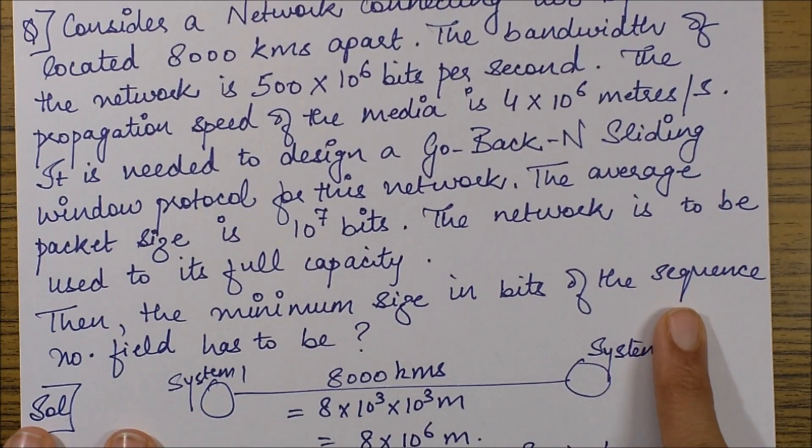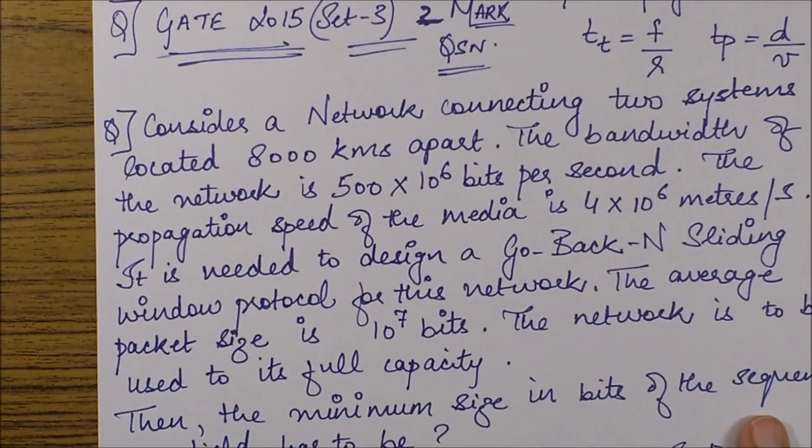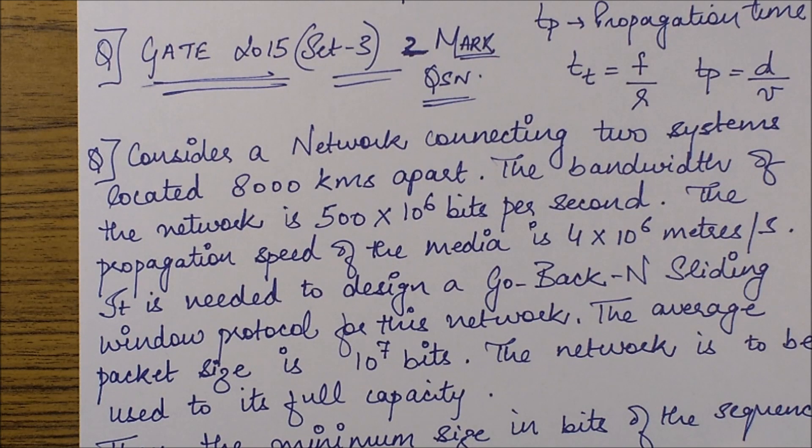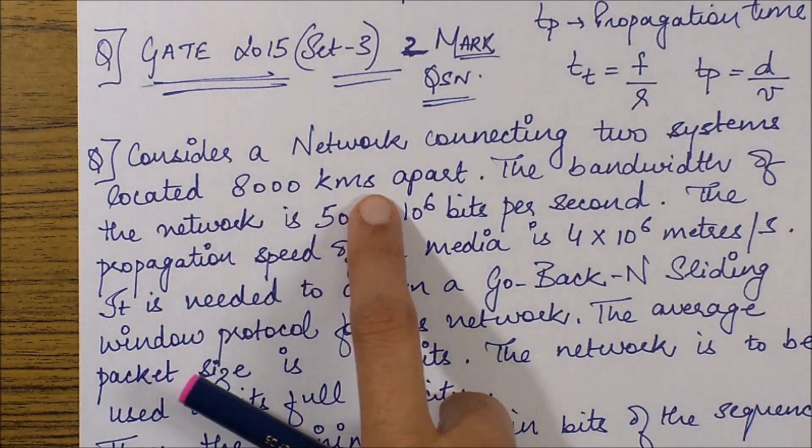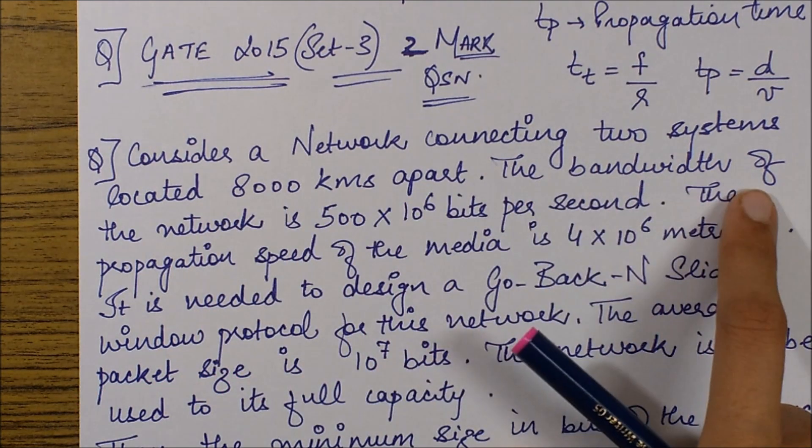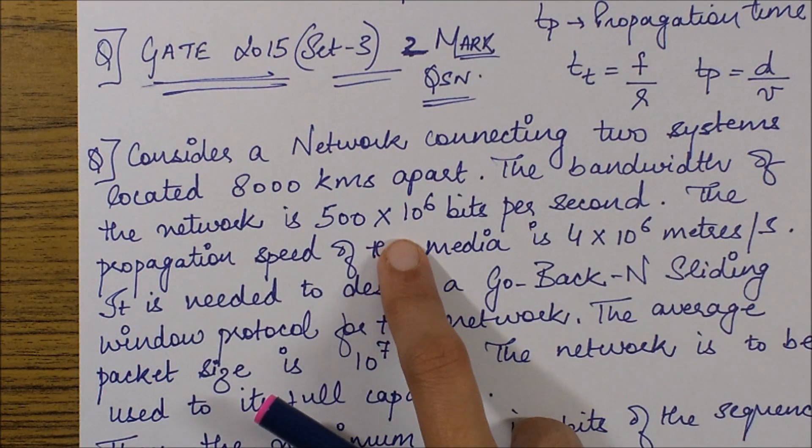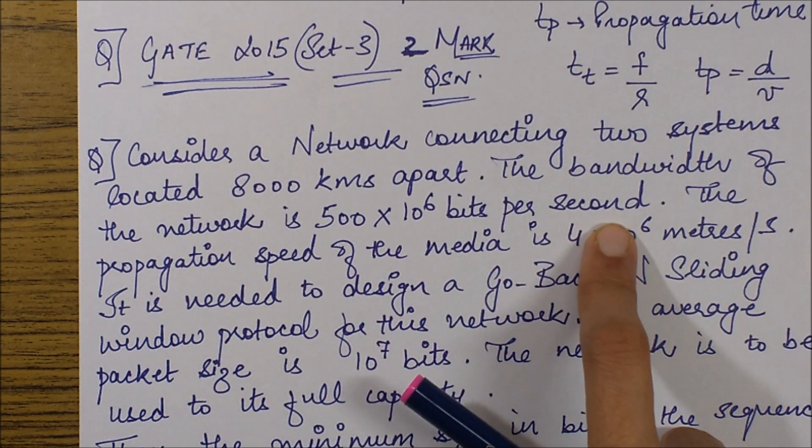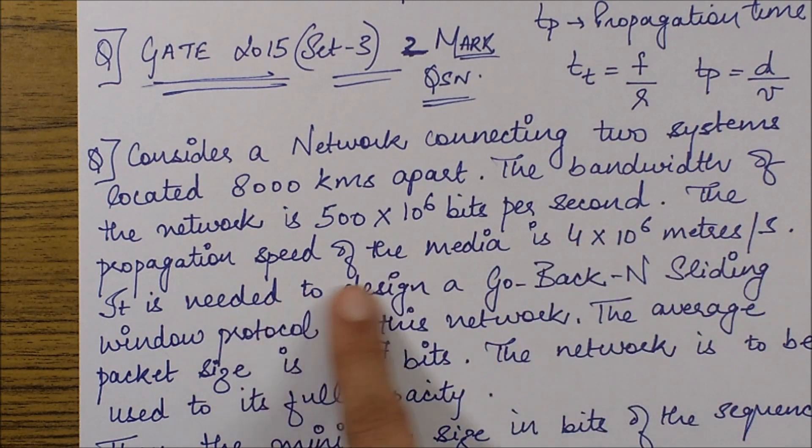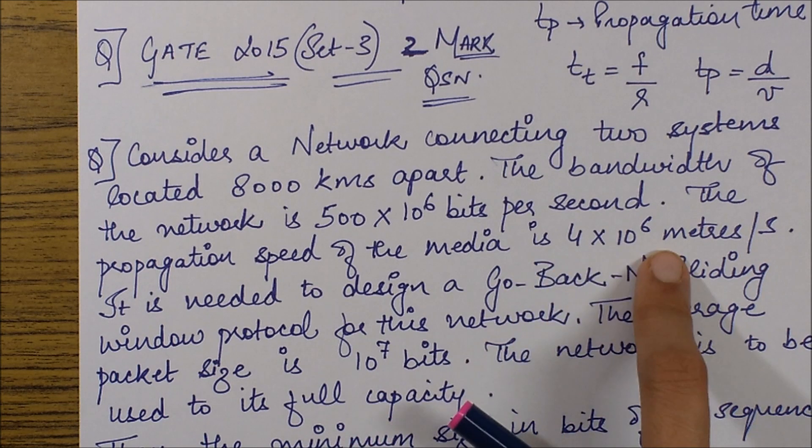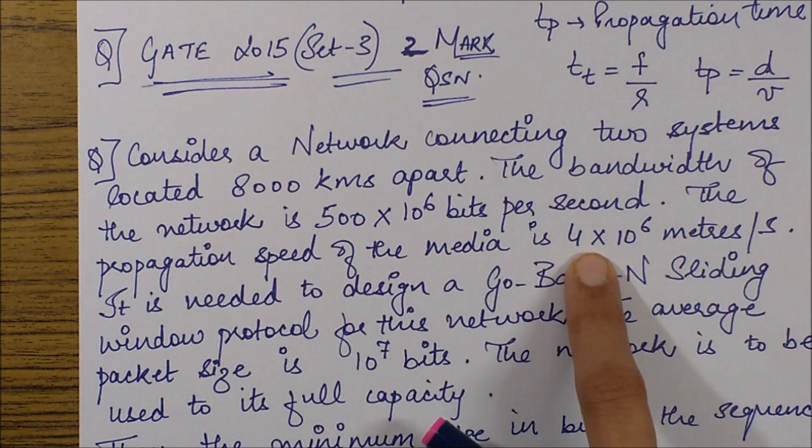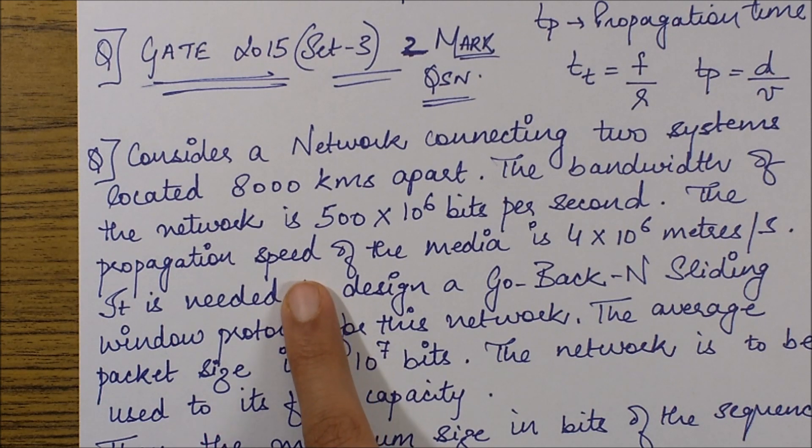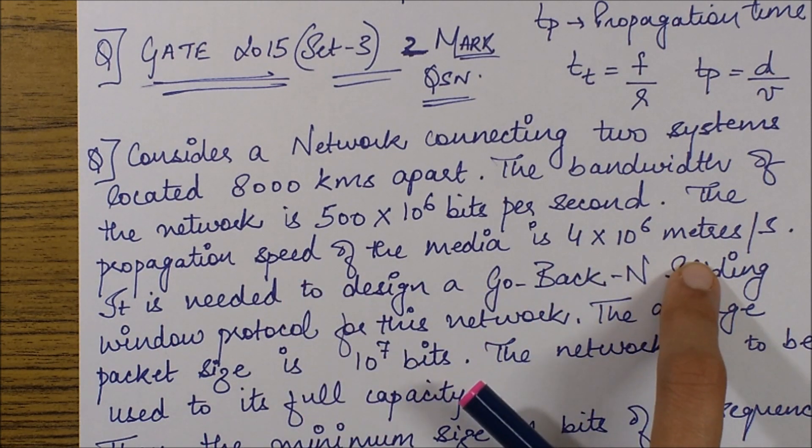Quickly moving on to the question, I'll be discussing a question from GATE 2015 which was a two-mark question. The question is: Consider a network connecting two systems located 8000 kilometers apart. The bandwidth of the network is 500 × 10^6 bits per second. The propagation speed of the media is 4 × 10^6 meters per second.